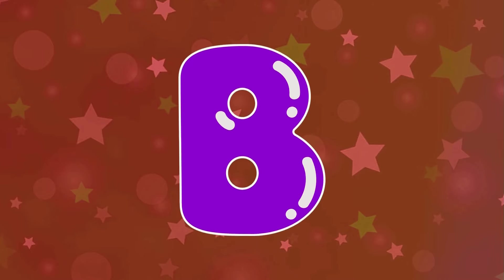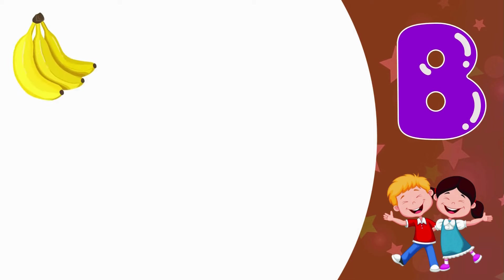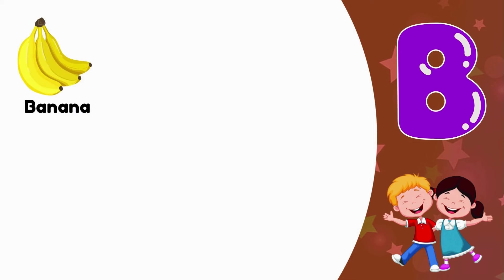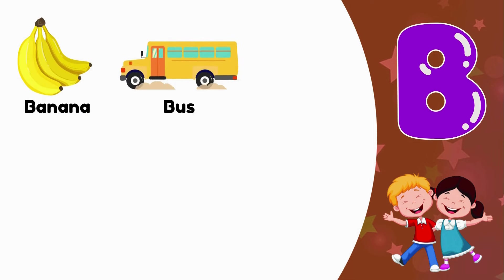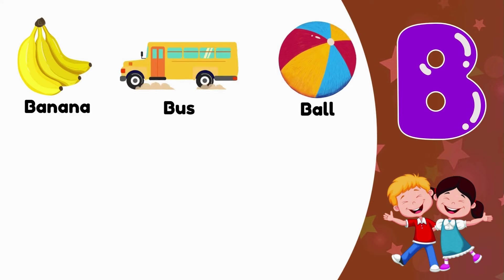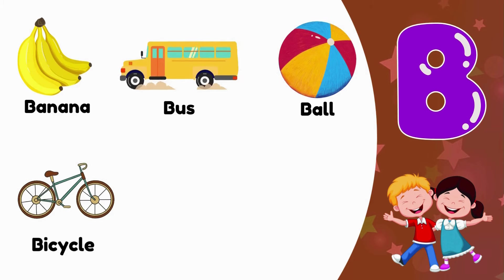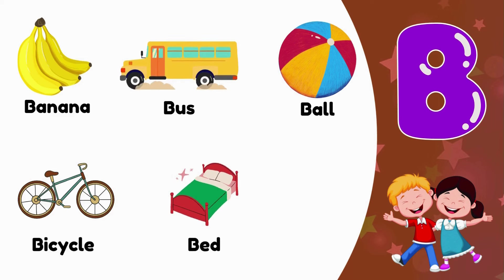B. B is for Banana. B is for Bus. B is for Ball. B is for Bicycle. B is for Bed. B is for Balloon.